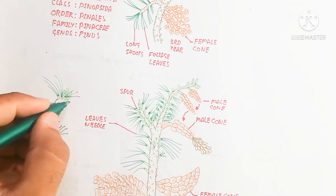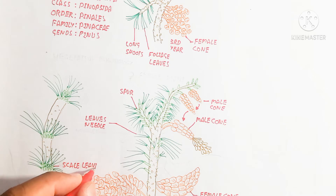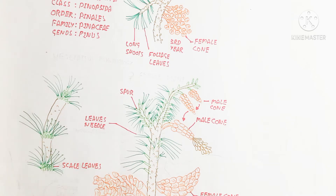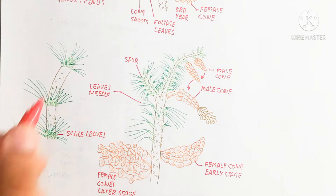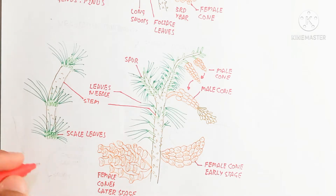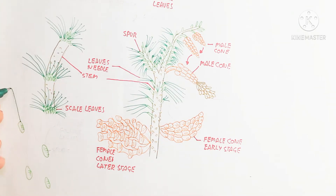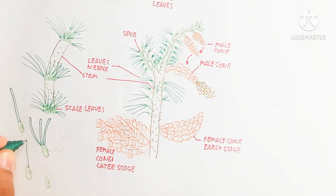The acicular foliage leaves are present, as you can see in this diagram. The scale leaf is also present — a scale-like leaf structure. In the next video we will understand the whole structure separately. This is just an overview. The spurs attach the needle-like leaves.